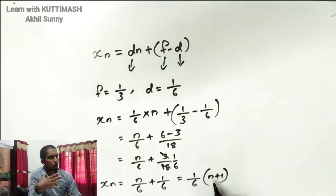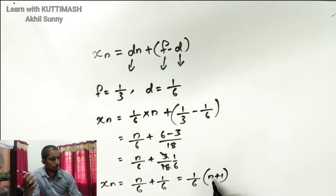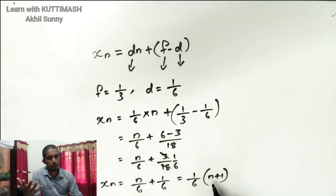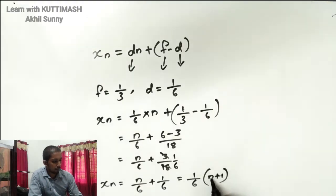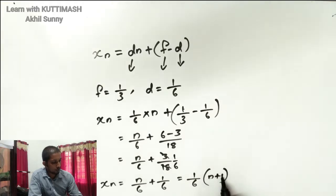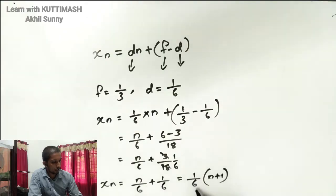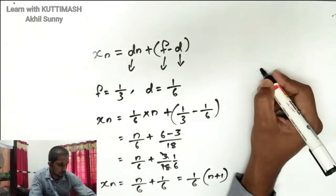When n = 1, xn = (1 + 1)/6 = 2/6. So for n plus 1 equal to 2, we have 2/6.